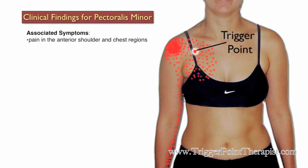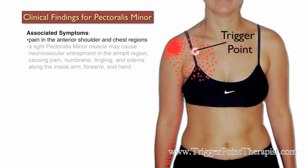Here are some associated symptoms for pectoralis minor trigger points. Your clients will complain of pain in the anterior shoulder and chest regions. A tight pec minor muscle can also cause neurovascular entrapment in the armpit region, and this can cause pain, numbness, tingling, and edema or swelling along the inside of the arm, forearm, and into the hand.